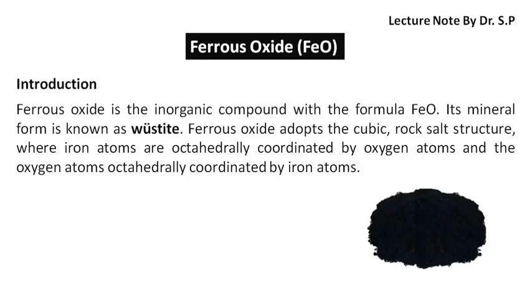Ferrous oxide is the inorganic compound with the formula FeO. Its mineral form is known as wustite. Ferrous oxide adopts the cubic rock salt structure, where iron atoms are octahedrally coordinated by oxygen atoms and the oxygen atoms octahedrally coordinated by iron atoms.